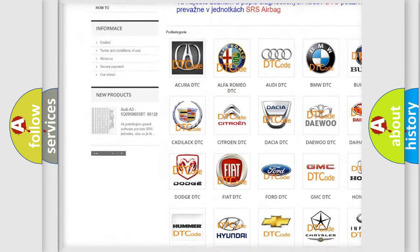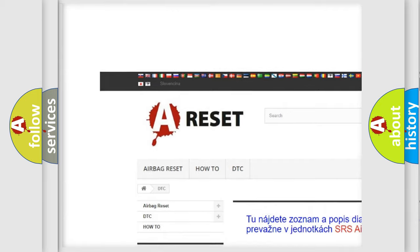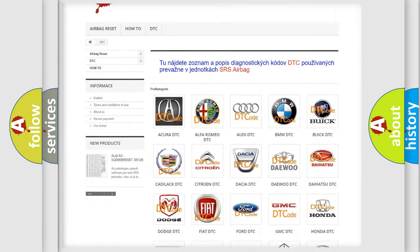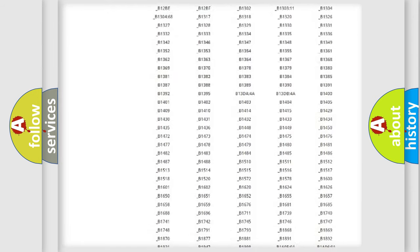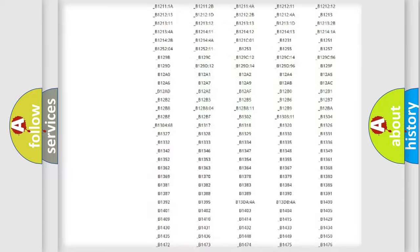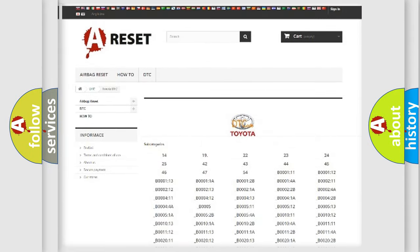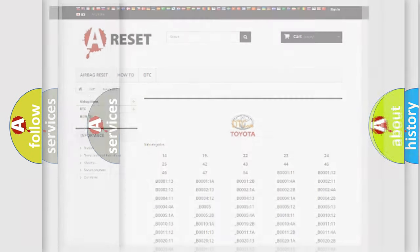Our website airbagreset.sk produces useful videos for you. You do not have to go through the OBD2 protocol anymore to know how to troubleshoot any car breakdown. You will find all the diagnostic codes that can be diagnosed in Toyota vehicles, and also many other useful things.